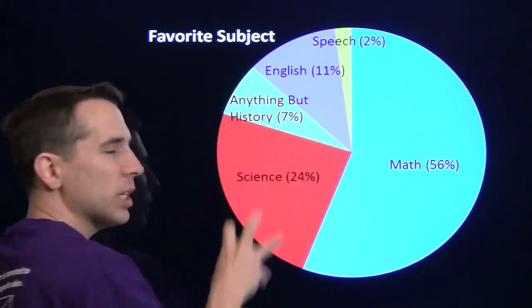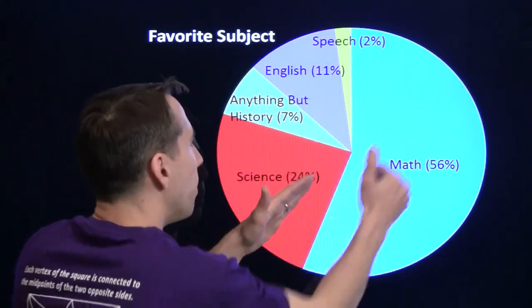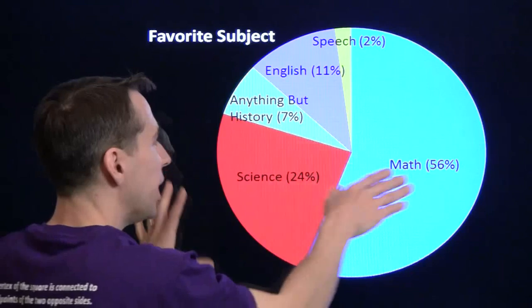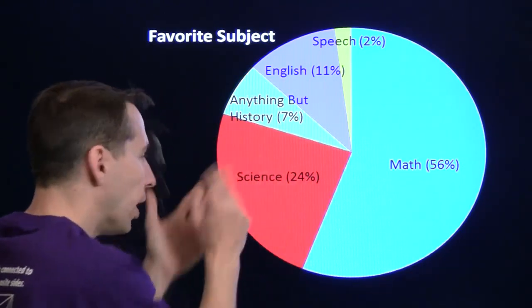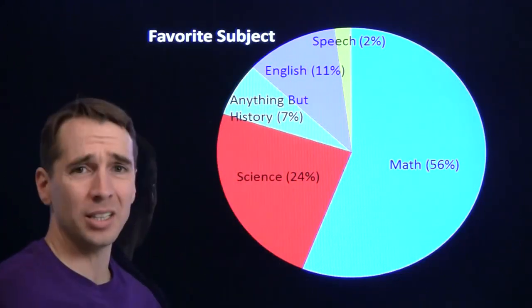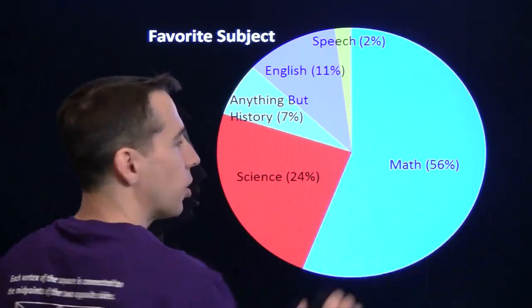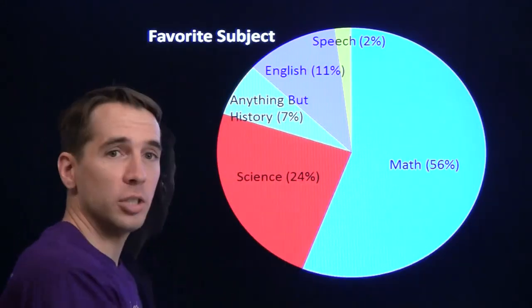So I can tell just by looking at this graph what portion of a whole. Without even looking closely at the numbers, I can tell at a glance a little more than half the people like math. Around a quarter of them like science. Almost nobody likes speech. And that's what a pie chart is good for, is revealing parts of a whole.